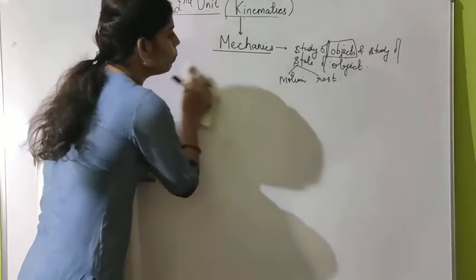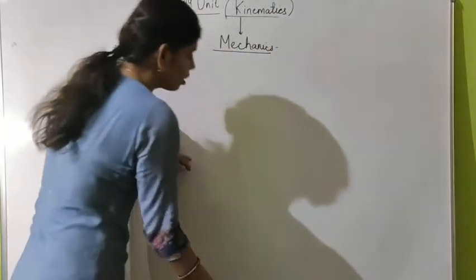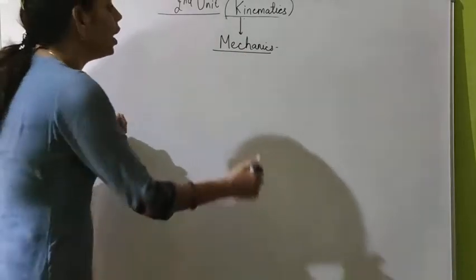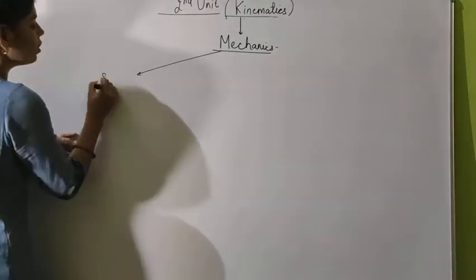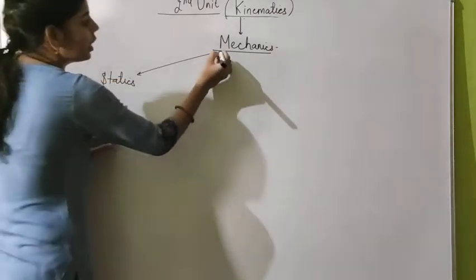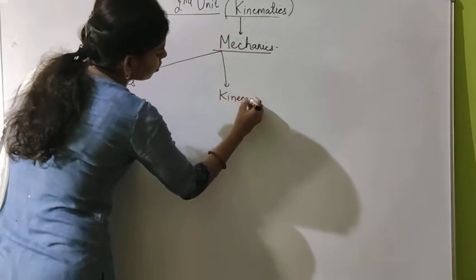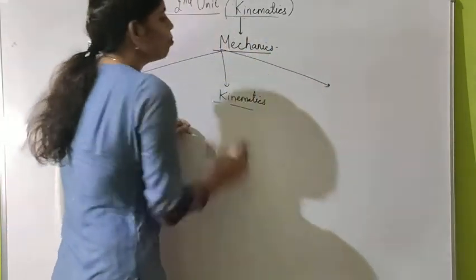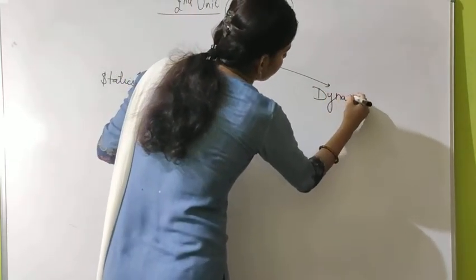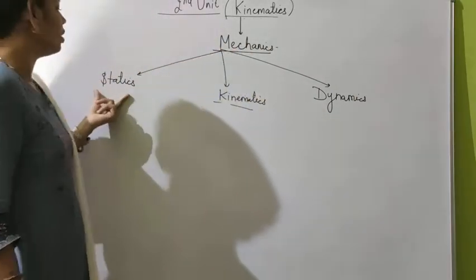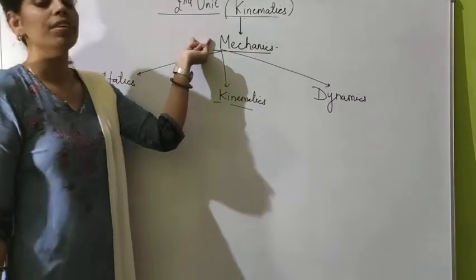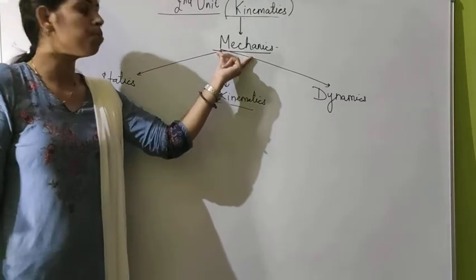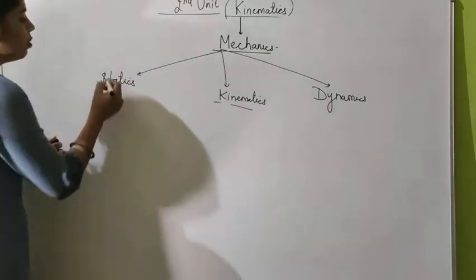Now let us move towards the branches of mechanics. Mechanics itself is a branch of physics, and mechanics also has sub-branches. Mechanics has three sub-branches: first is statics, second is kinematics — which is the name of our unit — and the third sub-branch of mechanics is dynamics.